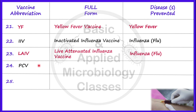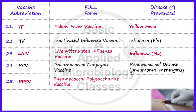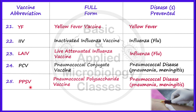Let's take the next vaccine, that is PCV. The full form of PCV is Pneumococcal Conjugate Vaccine, and it prevents pneumococcal disease — that is, pneumonia or meningitis — caused by Streptococcus pneumoniae, a bacterium. The route of administration is intramuscular. Next is PPSV, which stands for Pneumococcal Polysaccharide Vaccine, also used to control pneumococcal disease. Its route of administration can be either intramuscular or subcutaneous.